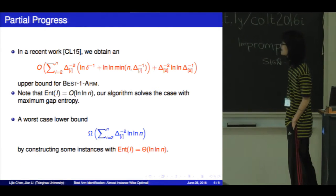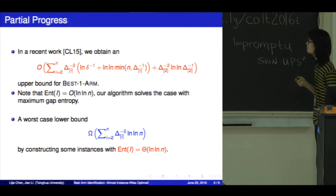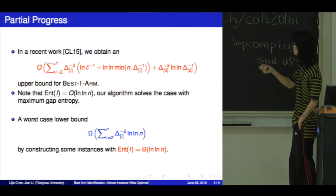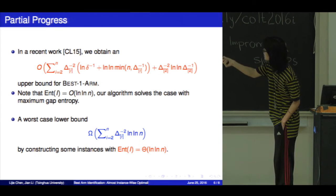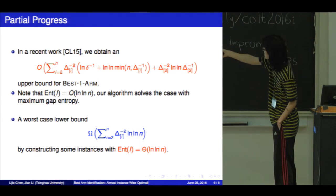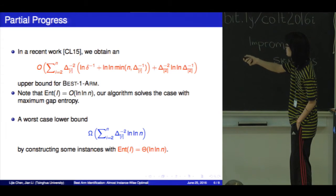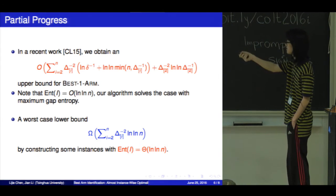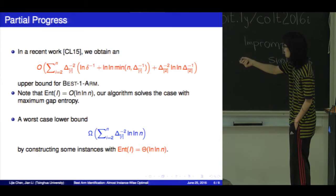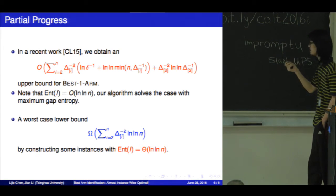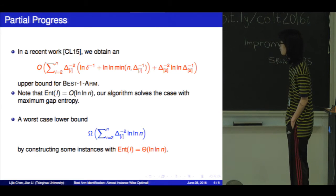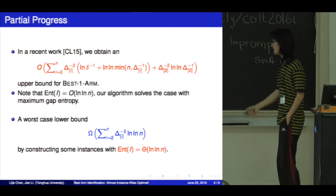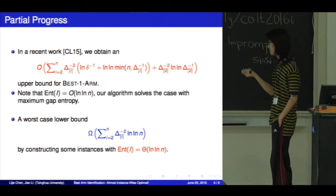Now let me report some potential progress on that. In our recent work with Jian Li, we obtained an algorithm of this complexity. The additional term is the same, but the previous one is not optimal — it is not matching the upper bound we conjecture. But when the entropy is maximized, it is bounded by log log n, so our algorithm actually solves the case when the gap entropy is maximum. We also give a worst-case lower bound of this quantity by constructing an instance whose entropy is the maximum possible.